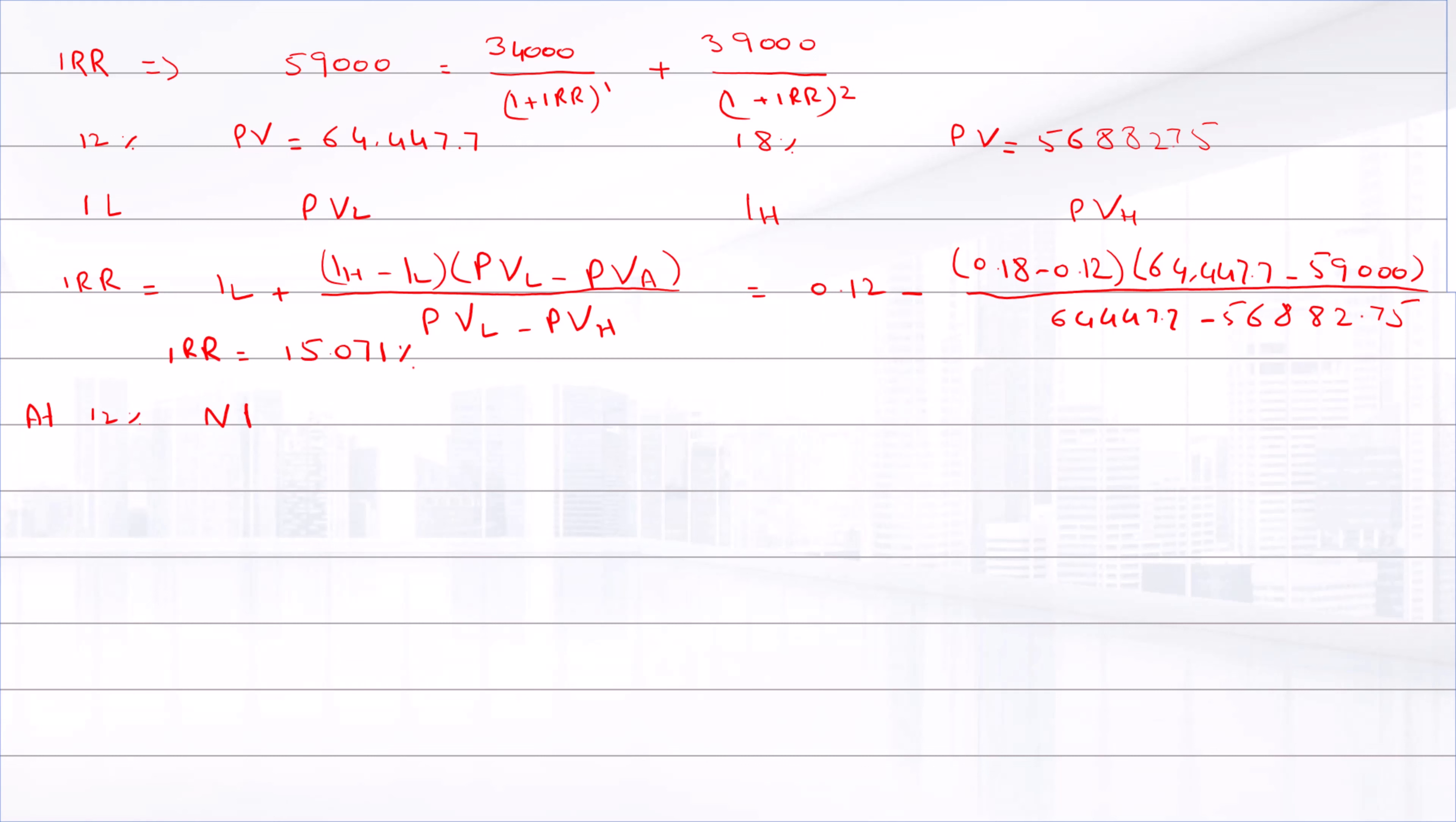At 12%, NPV equals 59,000 minus 64,447.70, and the answer is negative $2,447.7.